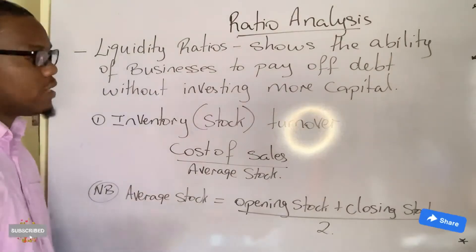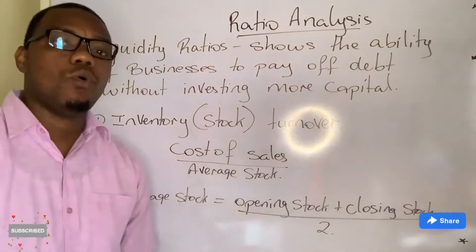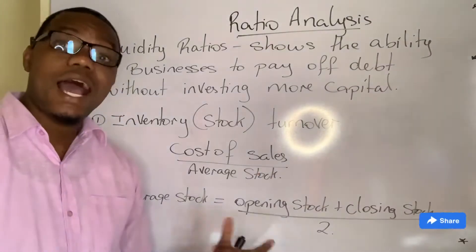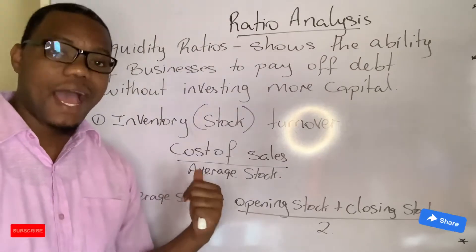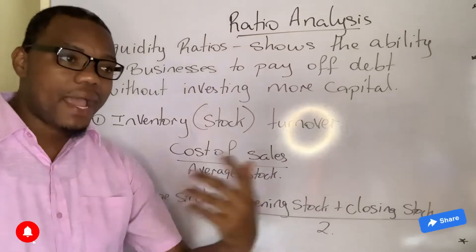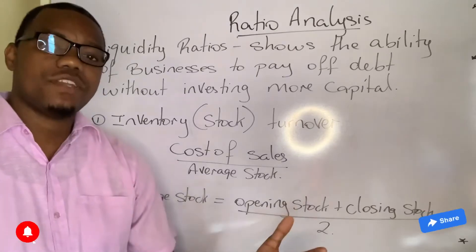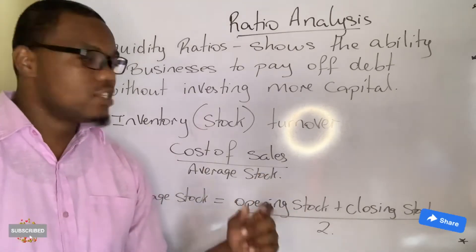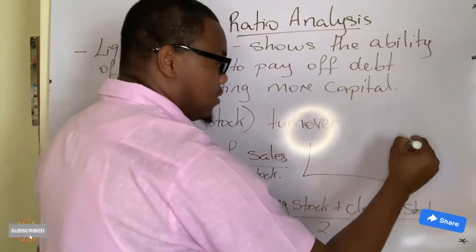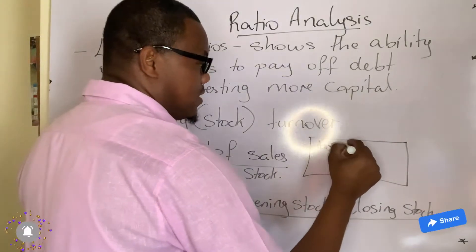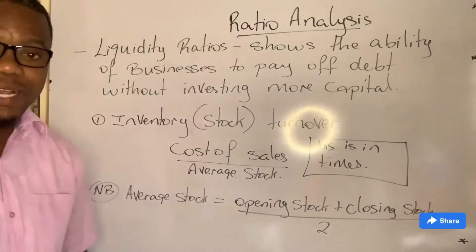This ratio shows how many times stock is bought — that's what turnover means. If you have a business, do you want this ratio to be high or low? This ratio should be high, because it means you are buying more stock. More stock bought means your sales are good, and if your sales are good, your profits would likely be better. The answer to this ratio is expressed in times — for example, four times or five times.